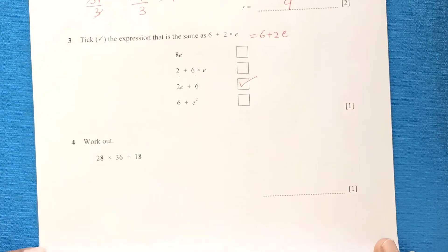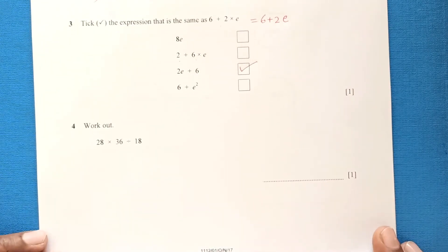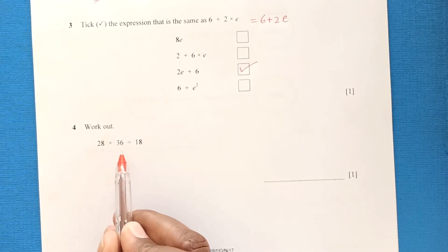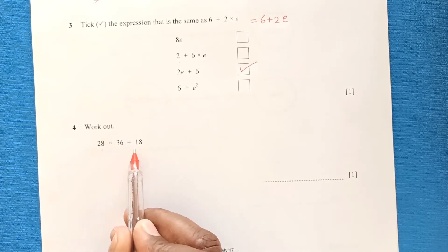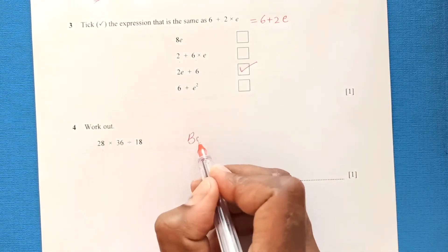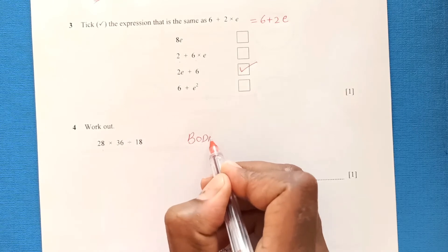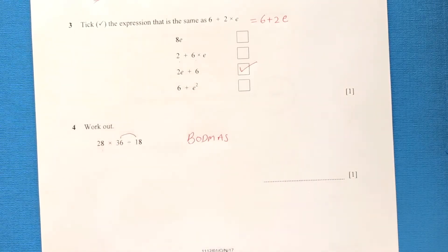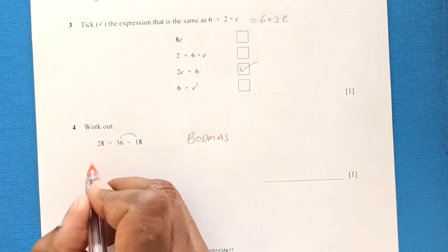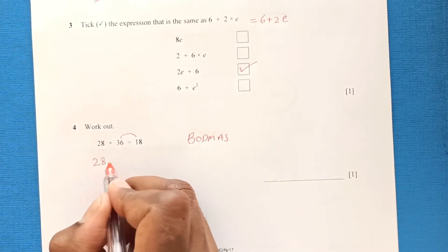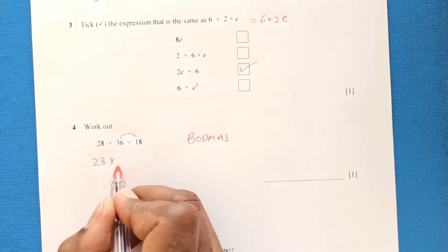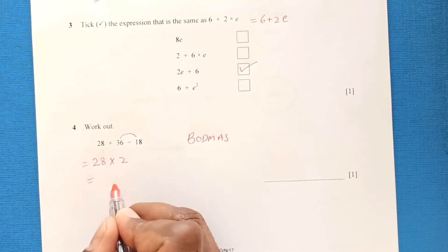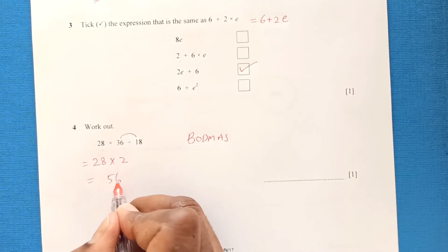Question four: work out 28 times 36 divided by 8. Using order of operations, we first solve the division: 36 divided by 8 is not exact, but we can simplify — 28 times 36 divided by 8 gives us 28 times 2, which equals 56. So 56 is the answer.